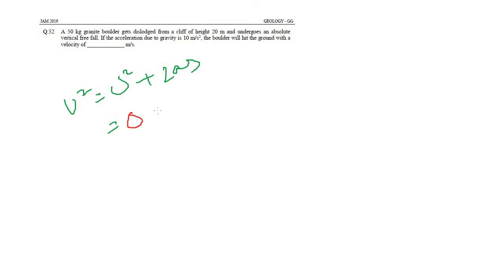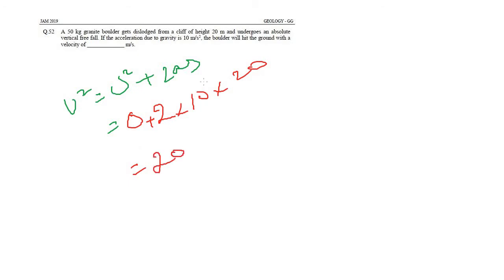Here u is 0, a is given as 10, and distance s is 20. If you calculate it, the final velocity will be 20 — that is, the square root of 400, which is 20 meters per second. This was from class 12 physics.